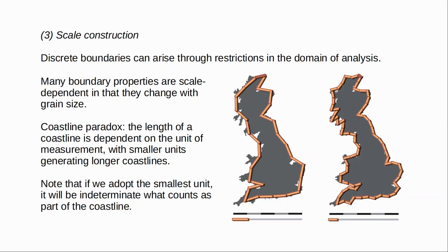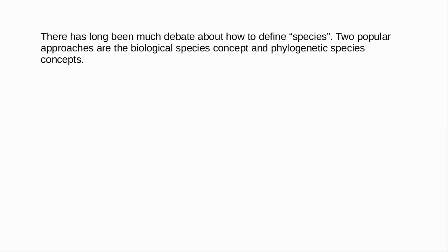So in a similar way, discrete boundaries can be dependent on scale. Consider species — there has long been a debate among biologists and philosophers of biology concerning how to define species, and there are a variety of different species concepts. The biological species concept holds that a species is any population of organisms that can interbreed and are reproductively isolated from other populations. Then there are various phylogenetic species concepts, which emphasize historical patterns of ancestry and descent. Despite decades of debate, there's no consensus on the correct species concept. Part of the problem is that the history of life is one of continuous variation — all organisms evolve from a common ancestor — and there are a number of different evolutionary factors that can produce a cohesive lineage.